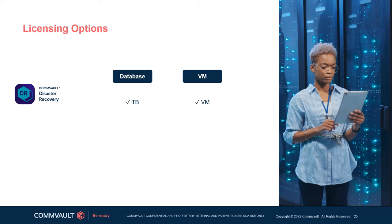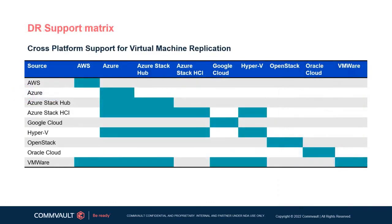These options make it easy for any customer to buy and use. For the support matrix, the leftmost column is source site or platform and the top row is the destination. The teal cells indicate where full DR orchestration options are available, with support continuing to expand regularly.